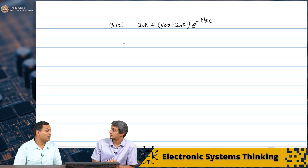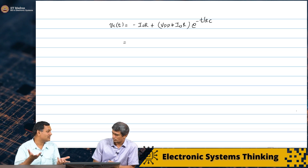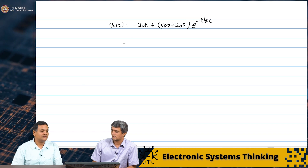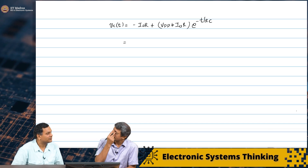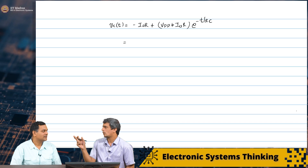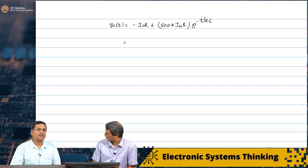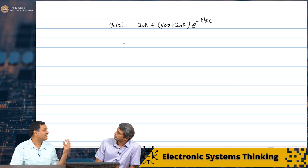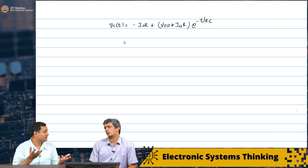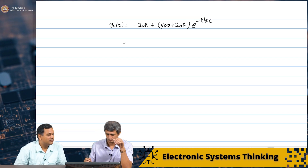At t→∞ the capacitor is an open circuit, so all the current comes from the resistor — that is what this is telling us. If you wait long enough, the voltage settles. This seems to be telling us something interesting: the voltage is not going to keep going on and on like the other case without the resistor. Once the voltage reaches minus I₀R, the capacitor is charged to that value and no more current needs to flow into it.